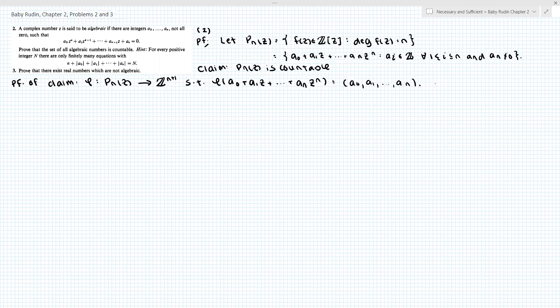So we're going to show now that phi is injective. Suppose phi of a_0 plus a_1 z plus dot dot dot a_n z to the n is equal to phi of b_0 plus b_1 z plus dot dot dot b_n z to the n. Well, this is if and only if the tuple a_0 through a_n is equal to b_0 through b_n, but this is if and only if a_i is equal to b_i for all i between 1 and n.